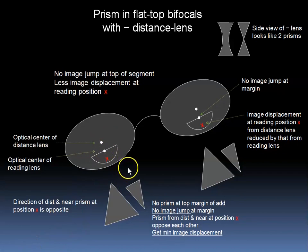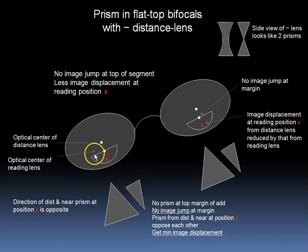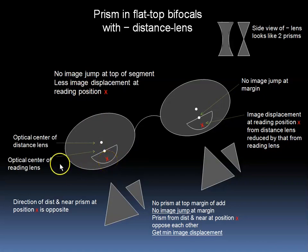One can see that with minus distance lenses, one would never want a round top bifocal because that would create both image jump and more image displacement at the reading position.